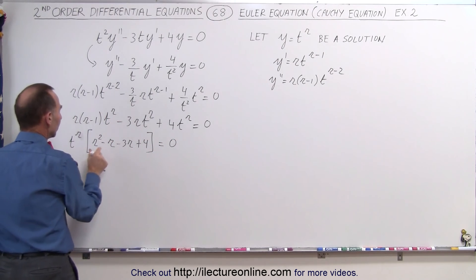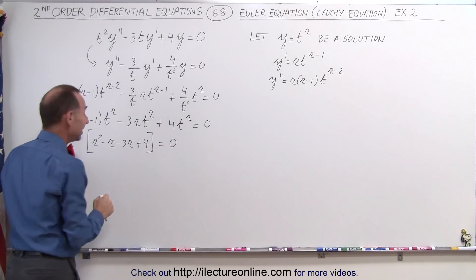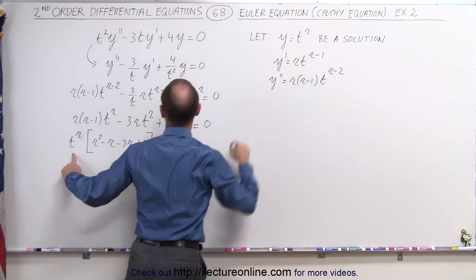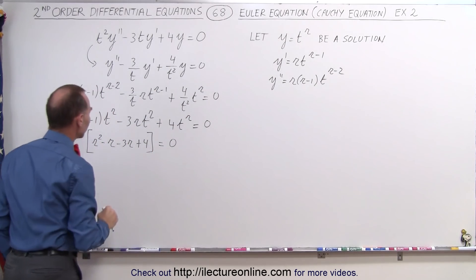So we have t^r times this equals zero. Now, t^r cannot be zero because if it is, we don't have a solution. Therefore, we know that this must equal zero.